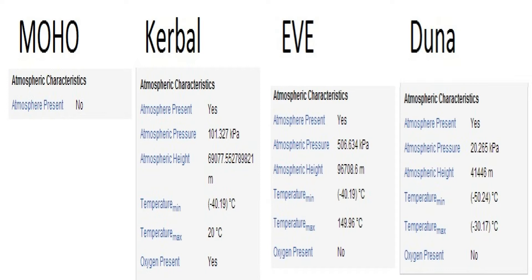Now if we look at EVE, EVE also has an atmosphere — it's much higher, at 96,000 meters. I haven't been there yet, but the atmosphere pressure is at 506. Maybe the actual true atmosphere starts at 60,000, but with pressure substantially higher — 5 times higher — so you're going to have a hell of a lot more resistance in EVE. Which is great if you're coming in with a big ship, because pretty much you really don't need to burn so much fuel — you can let the atmosphere brake a lot of it before you start your burns.